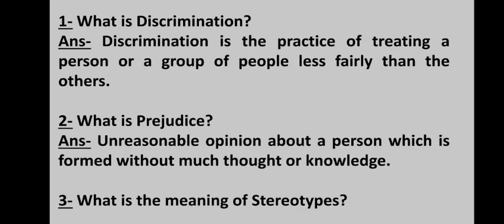The second topic is: what is prejudice? When someone judges another person in a negative way, it is called prejudice. We form unreasonable opinions about a person without much thought or knowledge. People have certain prejudices about others who may be different — this difference can be in terms of facial features, accent, eating habits or clothes. For example, a person from Bihar is often considered less intelligent and is sometimes treated in an ill-mannered way. This is prejudice.